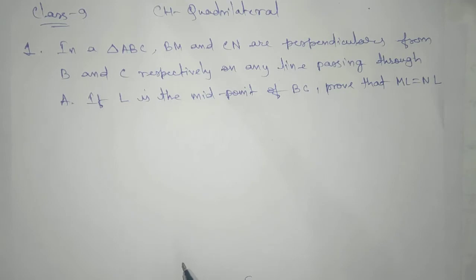In a triangle ABC, BM and CN are perpendiculars from B and C respectively on any line passing through A.